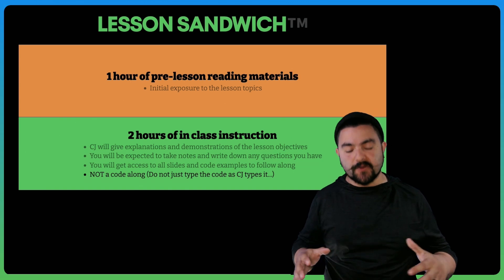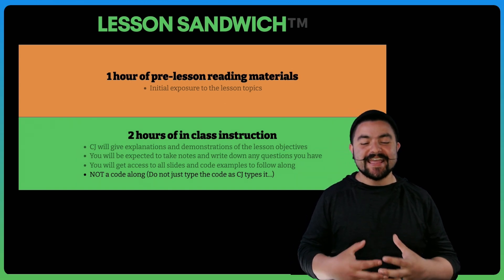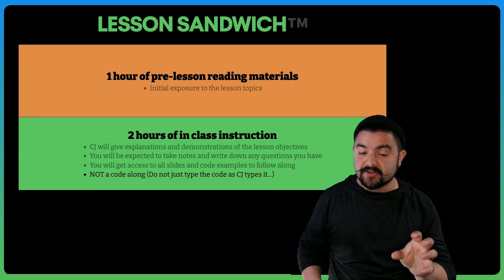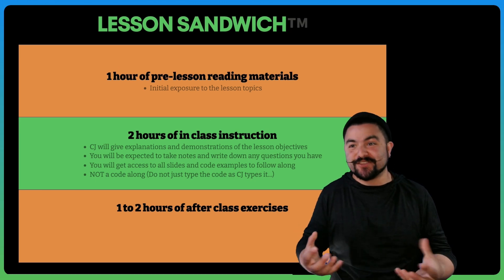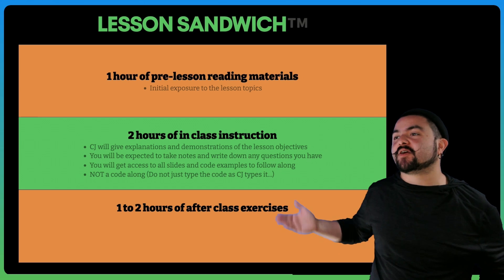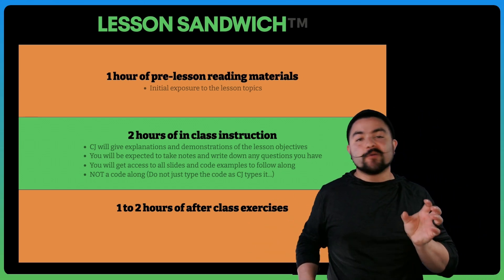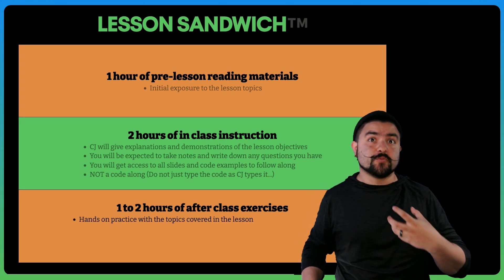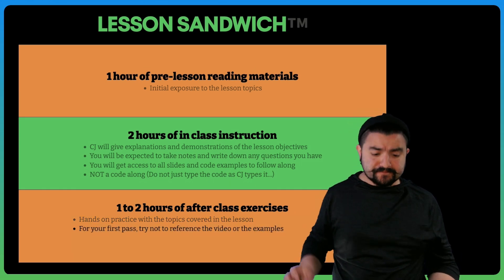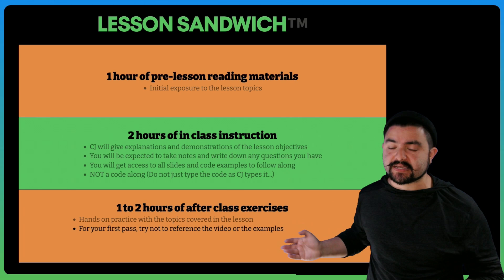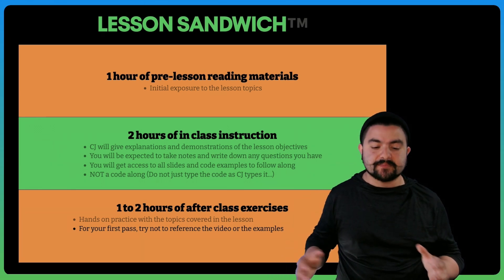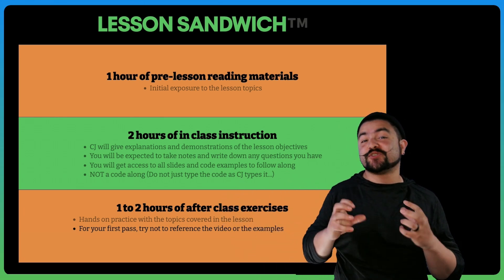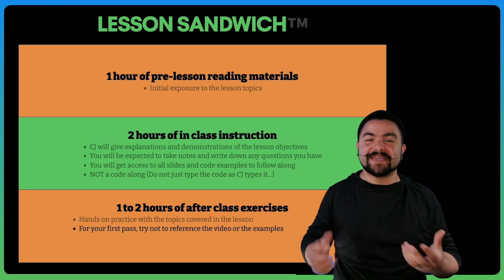It's important to note these videos are not just code-alongs — you're not supposed to just type the code as I write it. It's better if you take notes and internalize everything, so that after the lesson you can practice what we learned to make sure you actually understand it without watching the video or looking at the example. The first six lessons all include between one to two hours of after-class exercises where you can practice all of the things covered in isolation. I do recommend in your first pass on these exercises, don't reference the lesson videos or examples — just do your best to solve it, because if you can do that, it shows that you actually learned the thing.